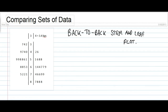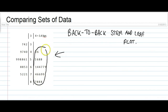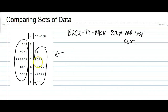One way to compare two sets of data is using a back-to-back stem and leaf plot. We've got an example of a back-to-back stem and leaf plot here on the left. In this back-to-back stem and leaf plot, we've got two sets of data — one set on the right and another set on the left. Although they're both measuring something similar, they're two distinct data sets.